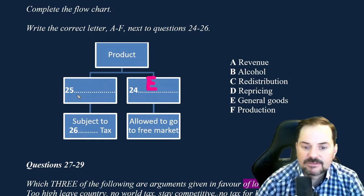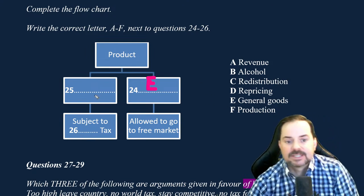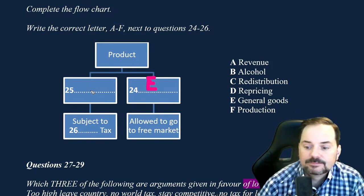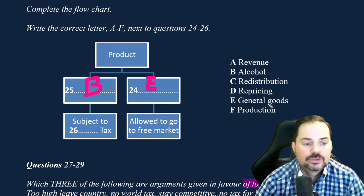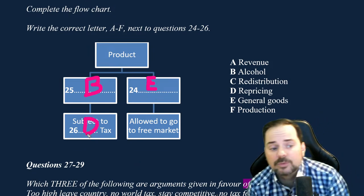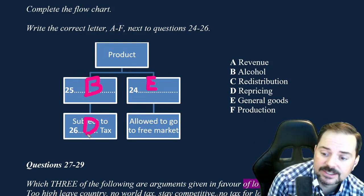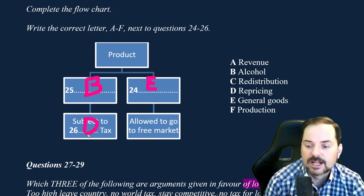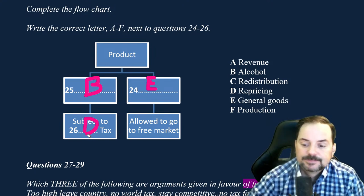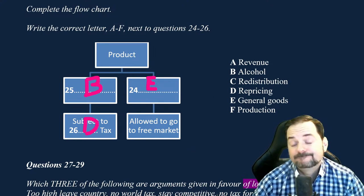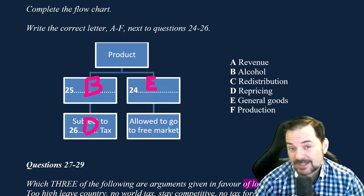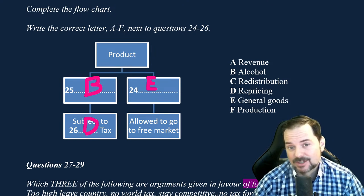Number 25 is B — alcohol — not allowed to go to the free market, it has a repricing tax. Number 26 is D. Logic will help you here. About 30 to 40 percent of the answers on the IELTS listening you can actually figure out from logic without even listening, so you should never panic.